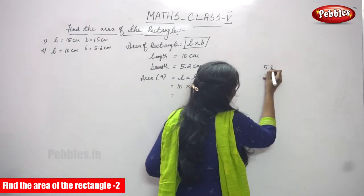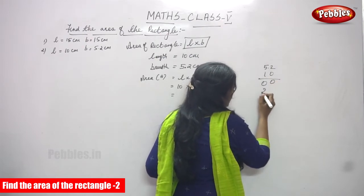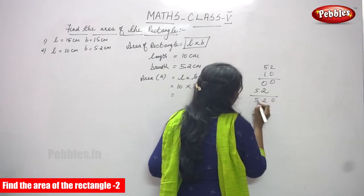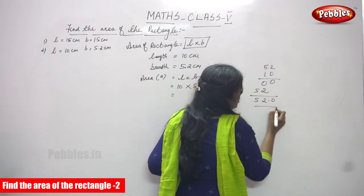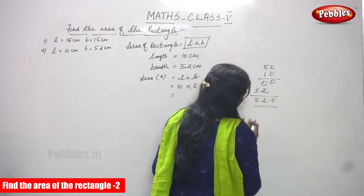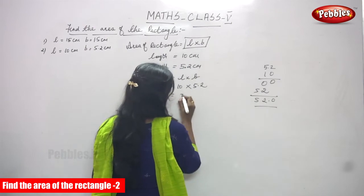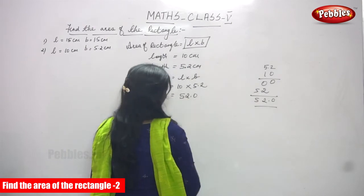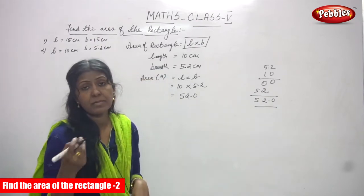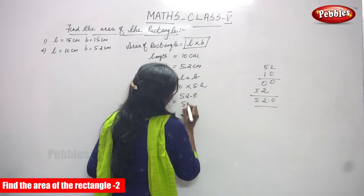Multiplying 5.2 into 10: the result is 52.0. From the right, we place the decimal point, giving 52.0. After the decimal point we have a zero, so we cancel it — the answer is simply 52 centimeters square.